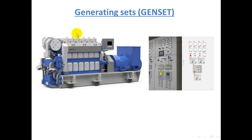This part is called the diesel engine, or any prime mover engine, and this is called the generator. So the GIN seat's main function is to produce electricity by having the engine in operation and thus driving the generators, which in turn generate the electricity.